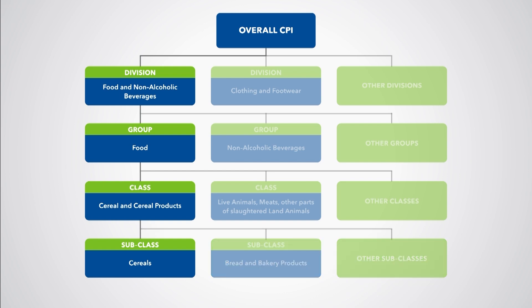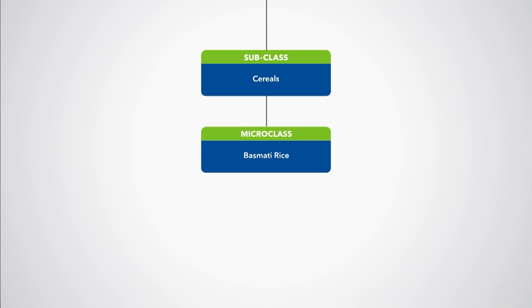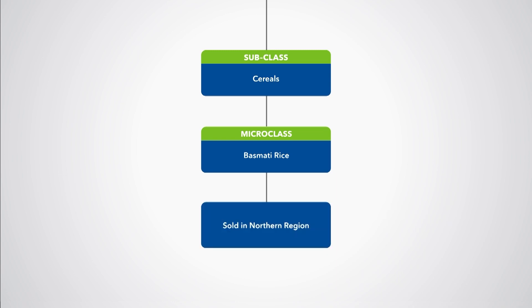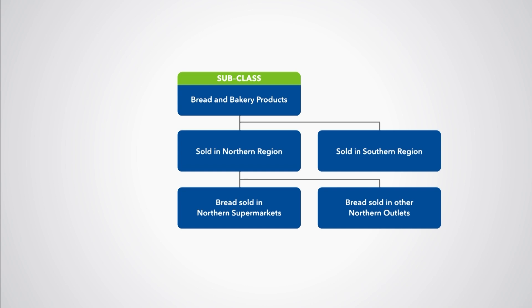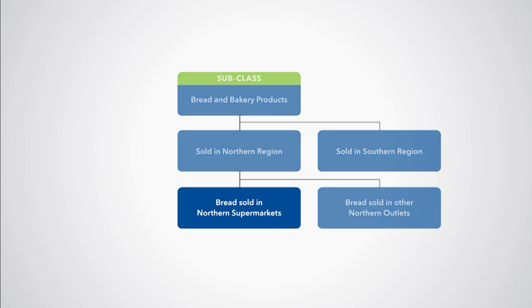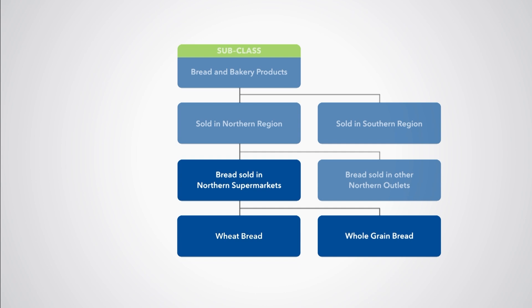Many countries use an even finer classification by further disaggregating below the level of the subclass. For CPI purposes, each subclass can then be divided into more homogeneous microclasses, such as basmati rice. The microclass may be further subdivided according to region or type of outlet. In some cases, a particular microclass does not need to be further subdivided, in which case the microclass becomes the elementary aggregate. Within each elementary aggregate, one or more products are selected to represent all the products in the elementary aggregate. For example, the elementary aggregate consisting of bread sold in supermarkets in the northern region covers all types of bread, from which wheat bread and whole grain bread are selected as representative products.